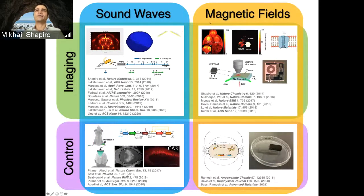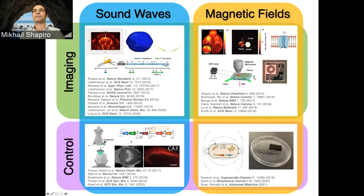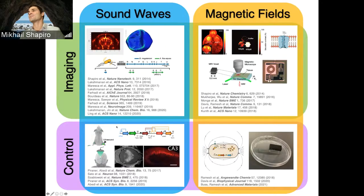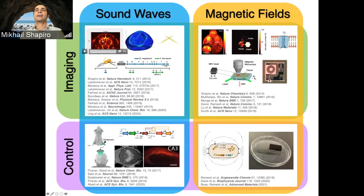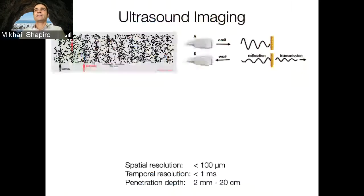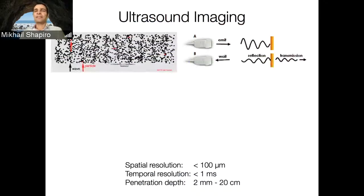Basically, we take the physics of sound waves and magnetic fields and extend these capabilities down to the cellular level through biomolecular engineering — meaning we find, engineer, and evolve proteins or other genetically encodable materials that have the right physical properties to interact with sound waves and magnetic fields instead of light. In our lab, we have sound waves, magnetic fields, and we're engineering biomolecules that allow us to use these forms of energy to either image or control the function of cells.